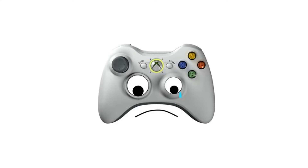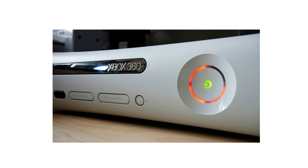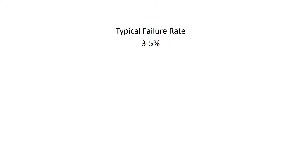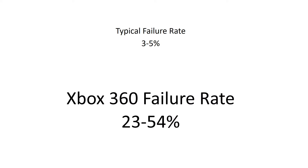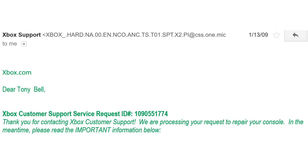Despite its success, the release of the Xbox 360 was not without major problems. Xbox 360s broke — a lot. The console frequently suffered from crashes and hardware failures due to overheating. When the console overheated, its power light would flash red to indicate a failure. Gamers refer to this as getting the red ring of death. A typical failure rate in the consumer electronics industry is 3–5%. Although Microsoft has never released official numbers, analysts estimate that early Xbox 360s failed anywhere between 23% and 54% of the time.